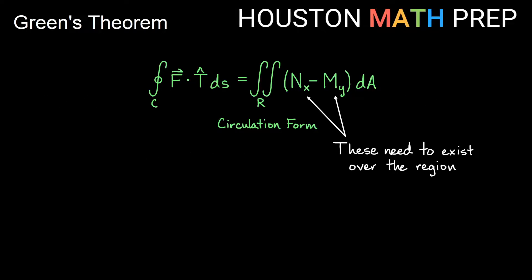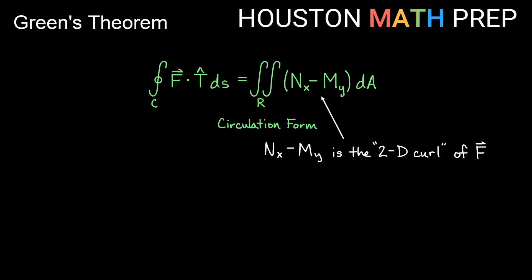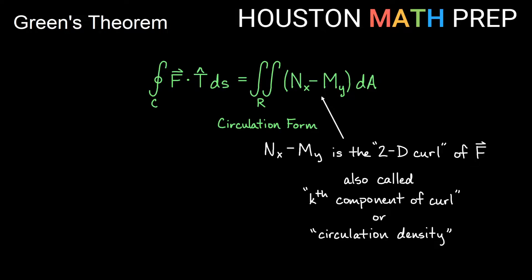A couple of things that need to be true: obviously these N_x and M_y expressions — these partial derivatives of M and N — need to exist over the region. We'll point out that partial N_x minus partial M_y is actually what we call the 2D curl of F, also called the k-th component of curl, or the circulation density.